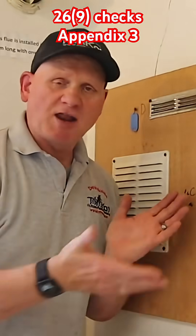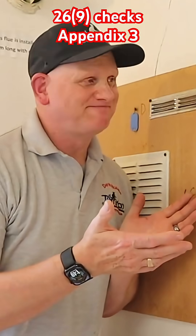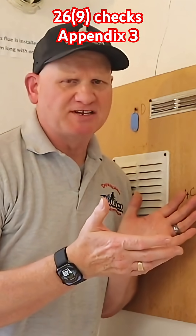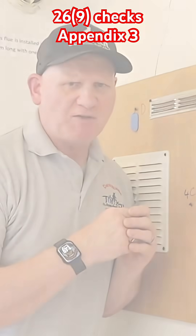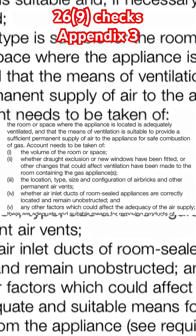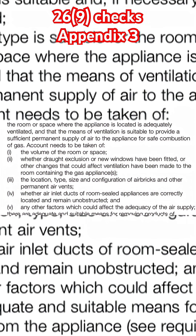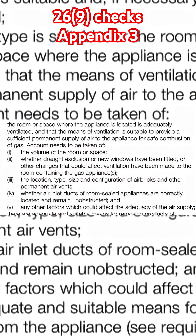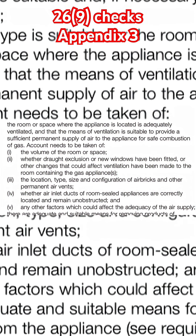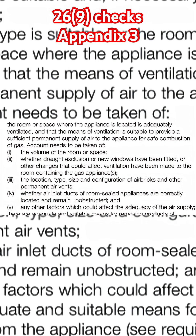Point C is all about adequate ventilation. The room or space where the appliance is located must be adequately ventilated, and the means of ventilation must be suitable to provide a sufficient permanent supply of air to the appliance for safe combustion of gas.